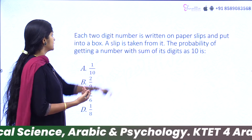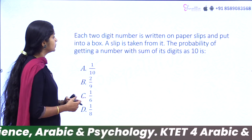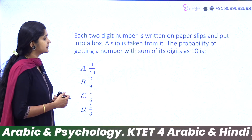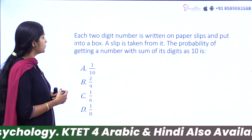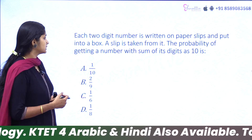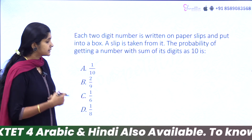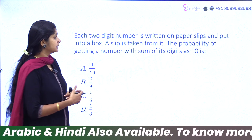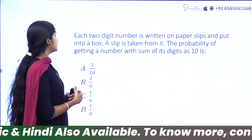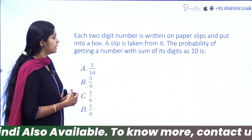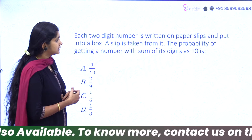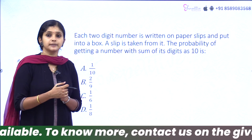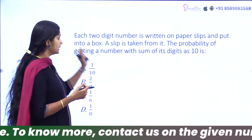The next question: each two-digit number is written on a paper slip and put into a box. A slip is taken from it. What is the probability of getting a number where the sum of its digits is 10?